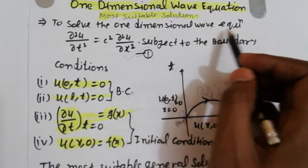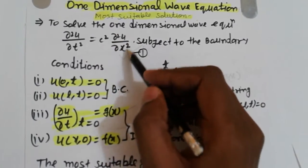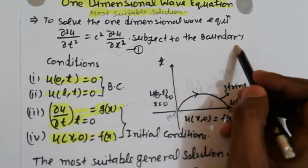First, one dimensional wave equation: ∂²u/∂t² = c²∂²u/∂x² subject to the boundary conditions.